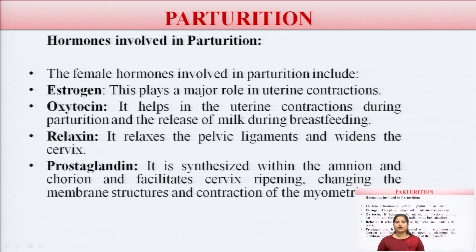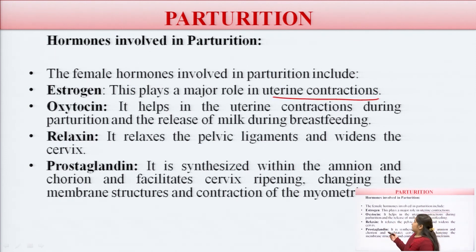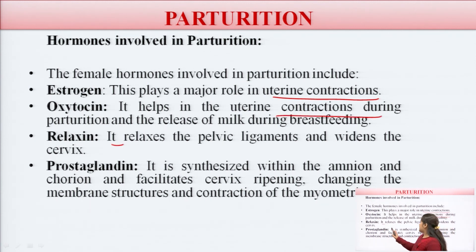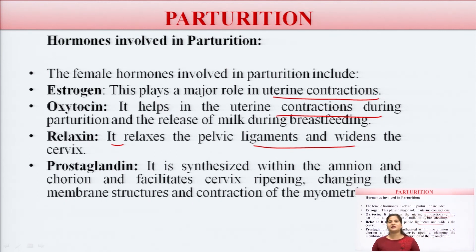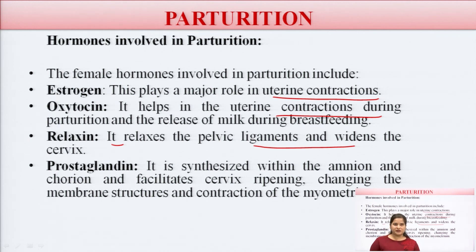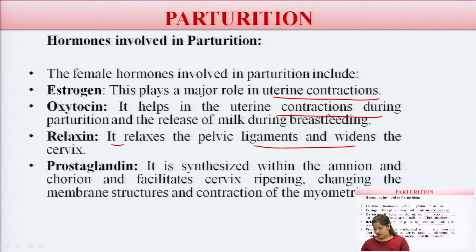Hormones involved during parturition include: estrogen, which plays a major role in uterine contraction; oxytocin, which helps widen the pelvic ligaments and cervix for proper dilation; and prostaglandins, synthesized in the amnion and chorion, which facilitate cervix ripening, change membrane structure, and stimulate myometrium contraction.